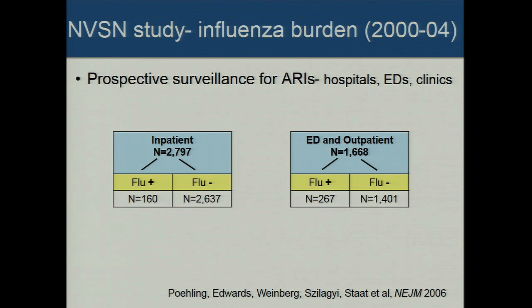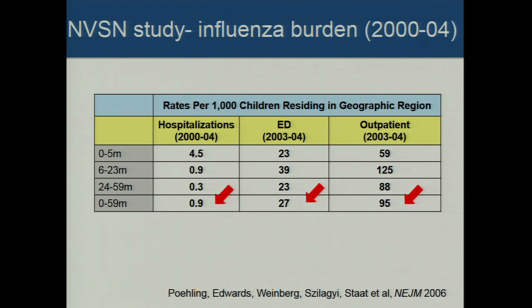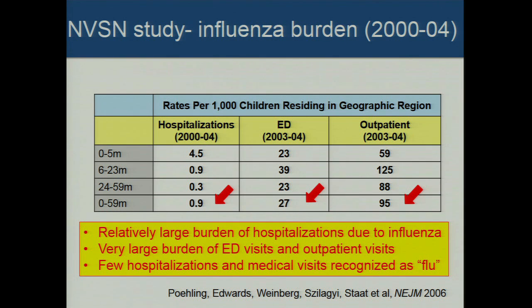We did a study led by Kathy Poehling from Vanderbilt on the burden of influenza disease, using prospective surveillance for acute respiratory illnesses in hospitals, EDs, and clinics. We enrolled several thousand inpatients with respiratory disease, did viral cultures and PCR to look for influenza, and did the same in EDs and outpatient clinics. Because this is surveillance within hospitals, EDs, and clinics representative of a geographic area, we can figure out population-wide rates — out of a thousand kids in a region, how many are hospitalized, seen in the ED, or seen in a clinic.